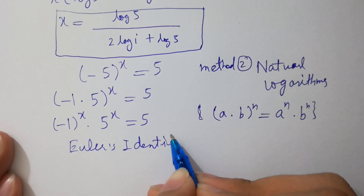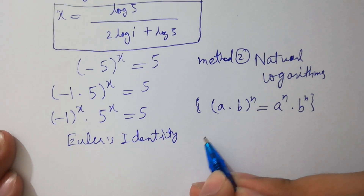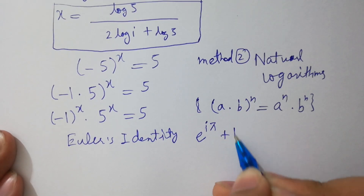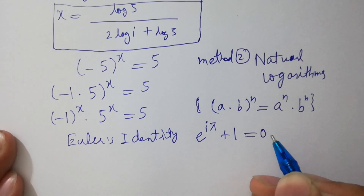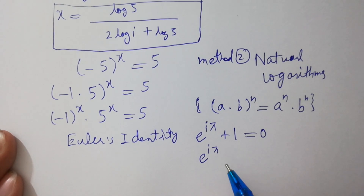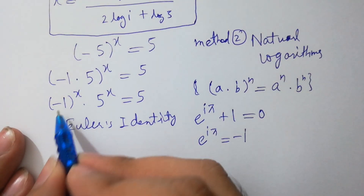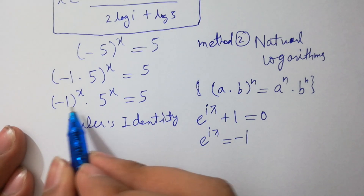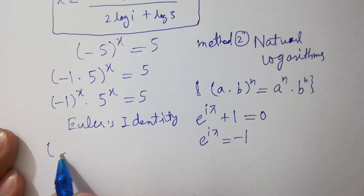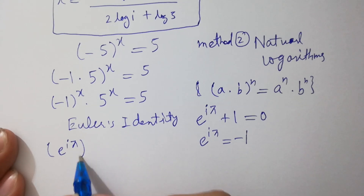which is e to the power i pi plus 1 equals 0, so e to the power i pi will be equal to minus 1. So, minus 1 to the power x will be equal to e to the power i pi to the whole power x.